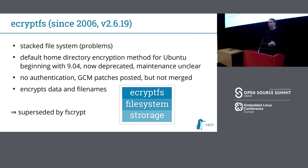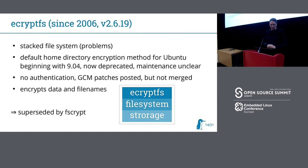There's also eCryptFS — probably known to long-time Ubuntu users. It's a stacked file system: you mount it on top of a different file system and it encrypts all files in the upper file system. It was used for per-user home directory encryption by Ubuntu for over 10 years, but it's now deprecated and most distributions including Ubuntu now use DM Crypt instead. The Ubuntu employees who previously maintained it have moved on, so maintenance is unclear — the kernel part is still maintained, but the user space tools haven't had releases for some time. It has no authentication — patches for authenticated encryption were posted years ago but never merged. I consider it superseded by FS Crypt.